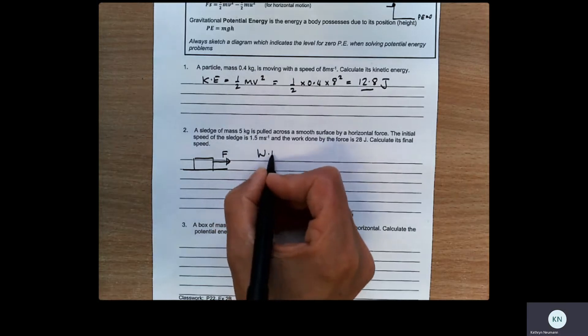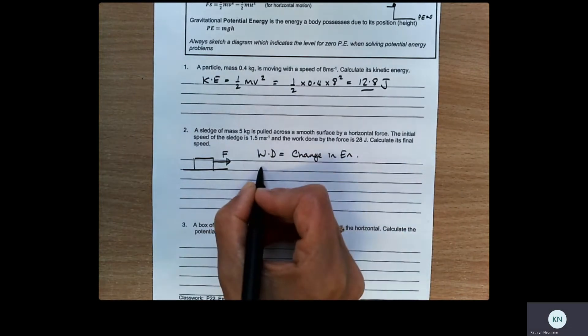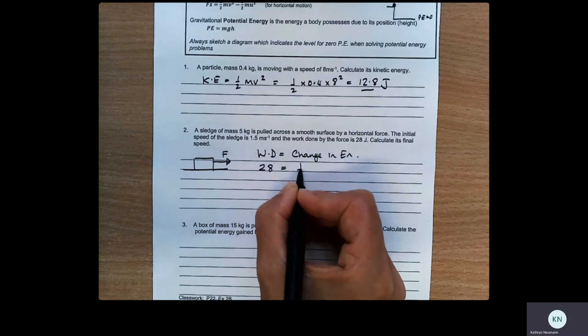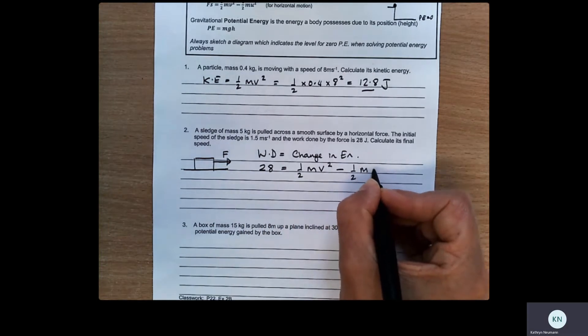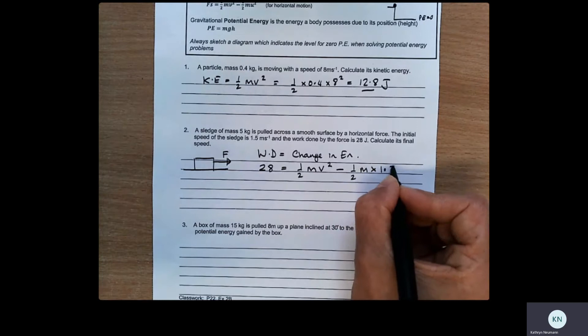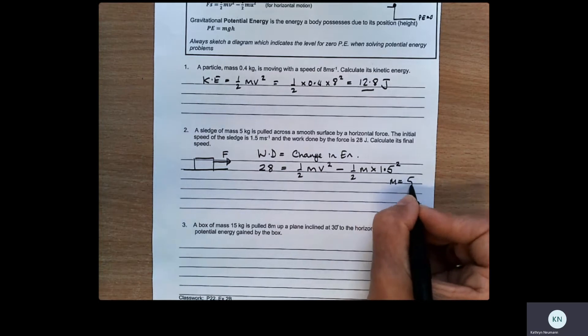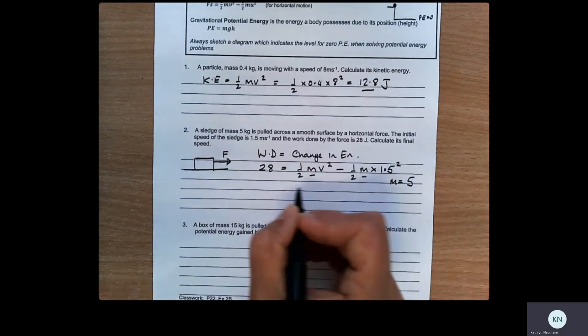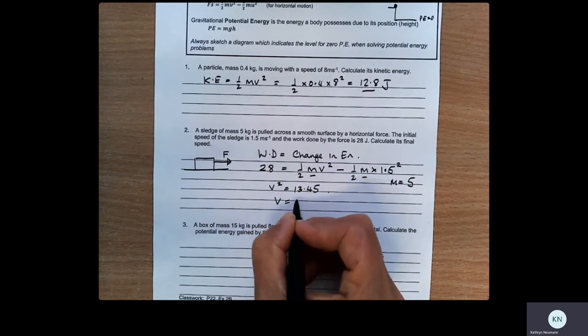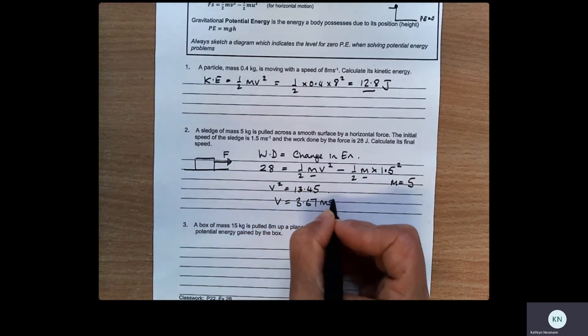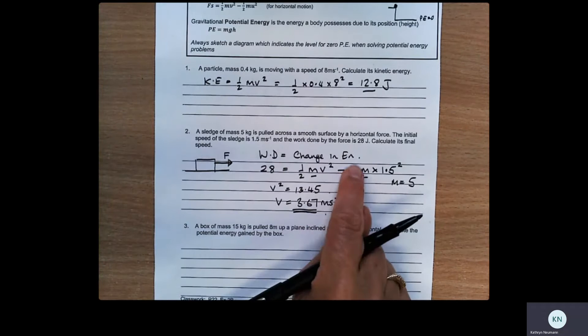So what we're going to say here is work done equals change in energy. So that's going to be, the work done is 28. That's going to be a half mv squared, where v is its final speed, minus a half m times 1.5 squared. And we know that m is 5, so I should put that in there. So using m equals 5 here and here, we end up with v squared is 13.45. And so v is 3.67 meters per second. So that's a question where you need to use this here. That work done is change in energy.